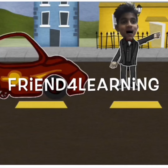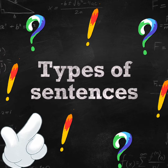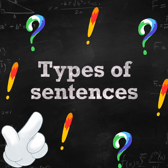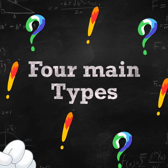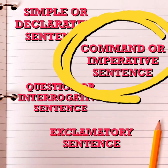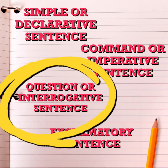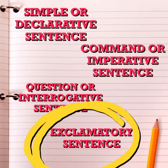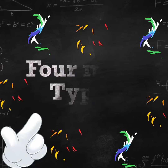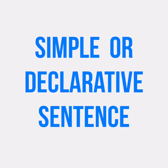Hello students, welcome back to Friend for Learning channel. Today our lesson is about types of sentences. There are four main types of sentences: simple or declarative sentence, command or imperative sentence, question or interrogative sentence, and exclamatory sentence. Now let's learn about each and every type in detail.